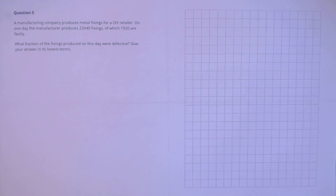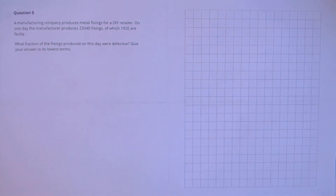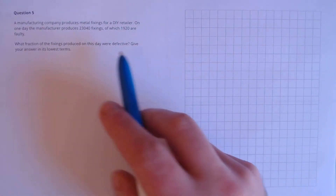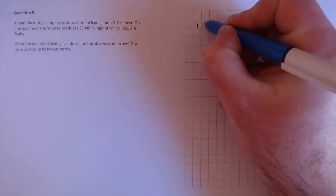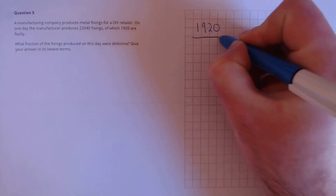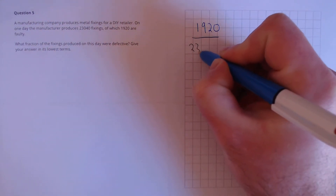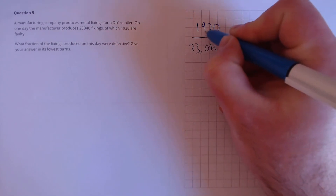Question 5. A manufacturing company produces metal fixings for a DIY retailer. On one day, the manufacturer produces 23,040 fixings of which 1,920 are faulty. What fraction of the fixings produced on this day were defective? Give your answer in its lowest terms. First, let's set up the fraction: that's 1,920 divided by the total, 23,040.